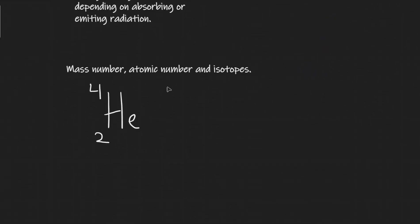Okay, now let's talk about mass number, atomic number and isotopes. In order to do so we're going to be considering the nucleus of a helium atom. Now what does that consist of? That consists of two protons and also two neutrons.